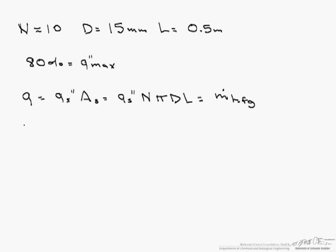So what we are looking for is this vapor production rate, or m dot, which is our heat flux times the number of tubes times pi dl divided by h_fg, or the heat of vaporization.